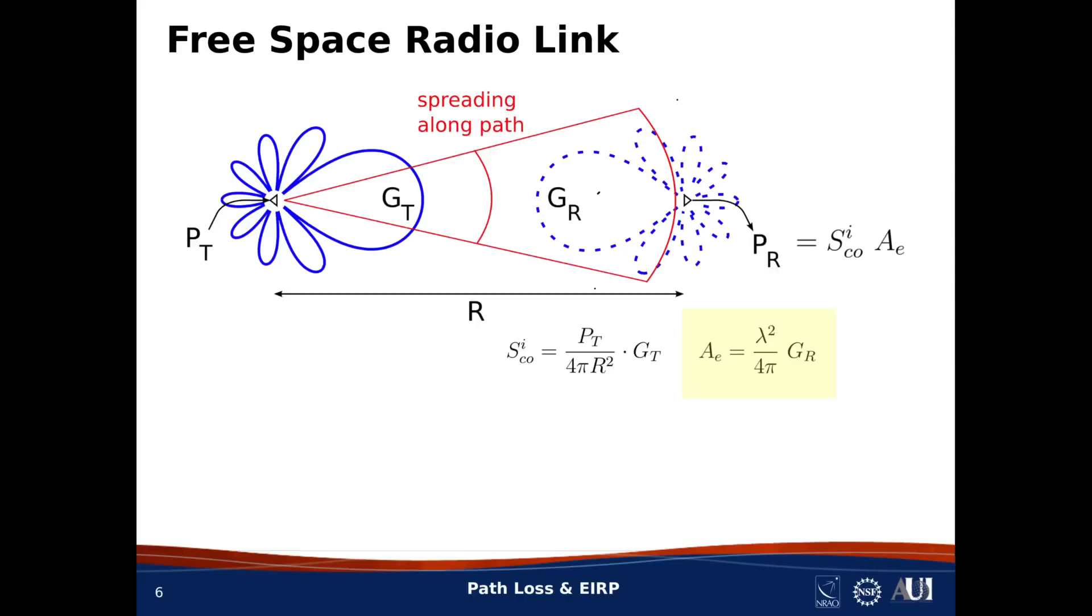Second, as shown in the equation on the right, we know that the effective aperture is related to the gain of the receive antenna by a factor of wavelength squared divided by 4 pi.